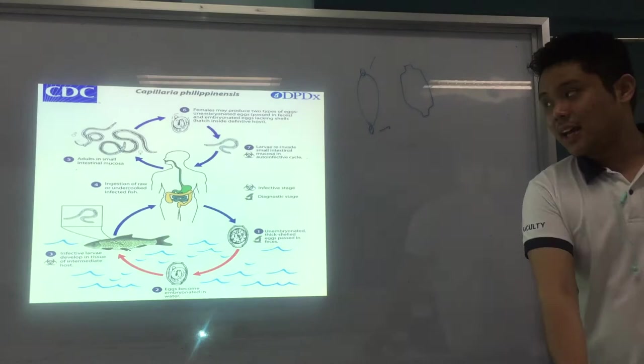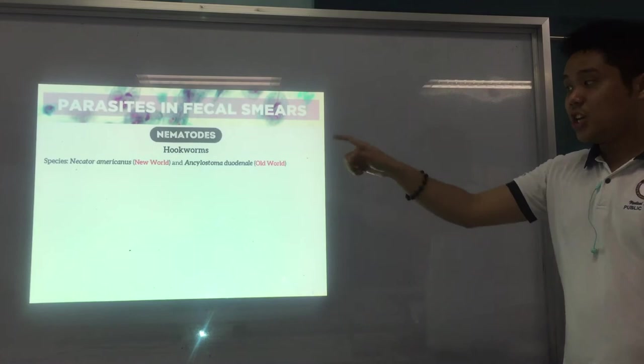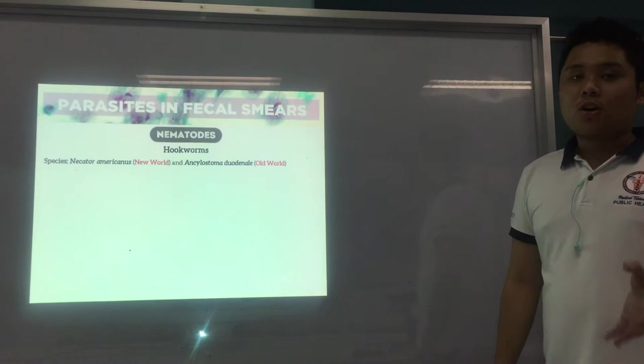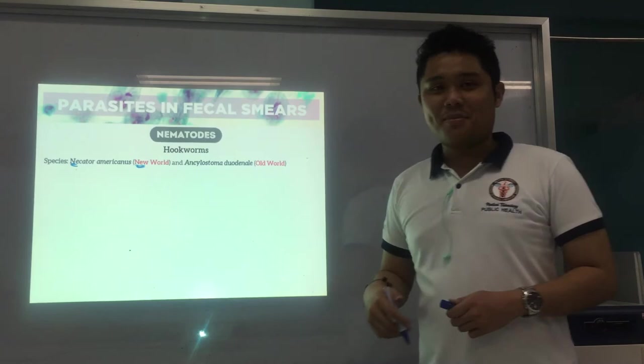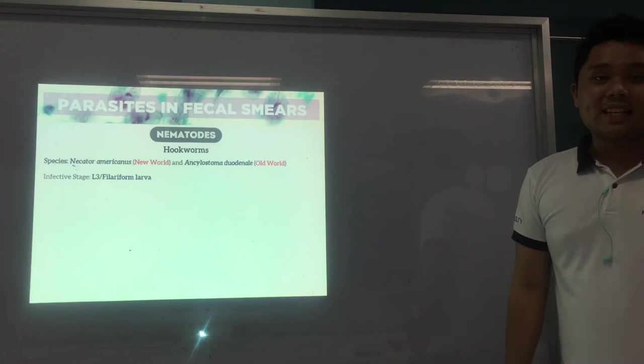Continuing, we have hookworms. We have two major species: Necator americanus, also known as the new world hookworm, and Ancylostoma duodenale, the old world hookworm. A mnemonic: N for Necator is N for new world; therefore, Ancylostoma is old world. The infective stage is the L3 or filariform larva, the same as Capillaria.